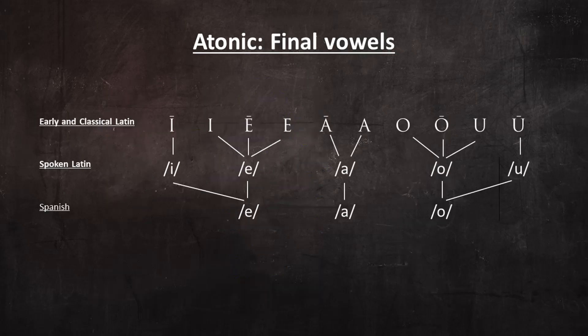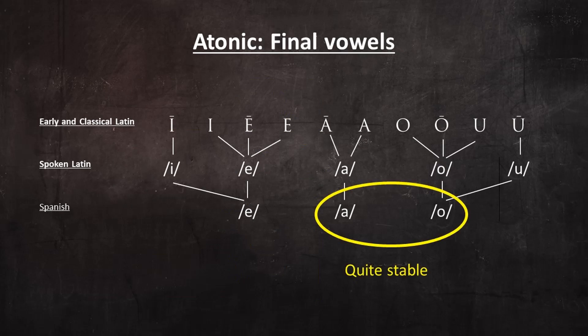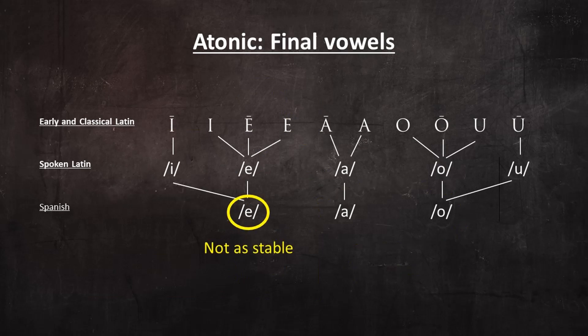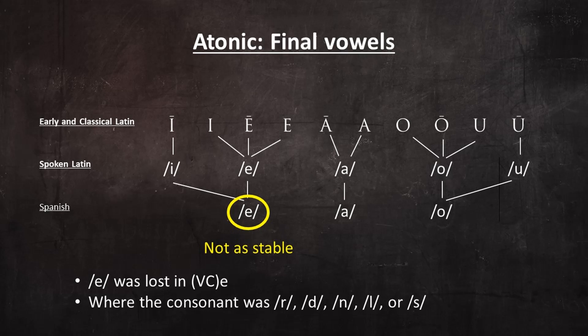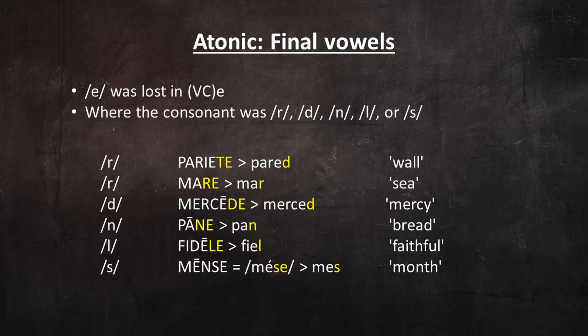Of the three final vowels that appear in Old Spanish, A and O have remained quite stable, with just a few changes in some limited contexts. Final E was not as stable. In texts from the 10th and 11th centuries, we observe that final E was lost in the sequence vowel-consonant-E, where the consonant was R, D, N, L, or S. Observe these examples.